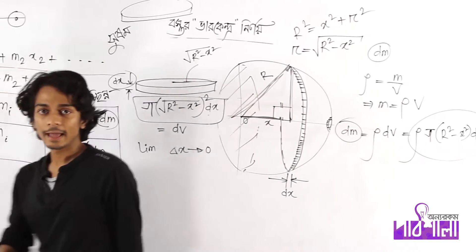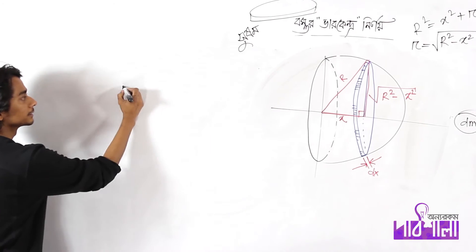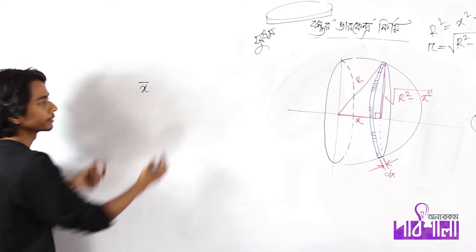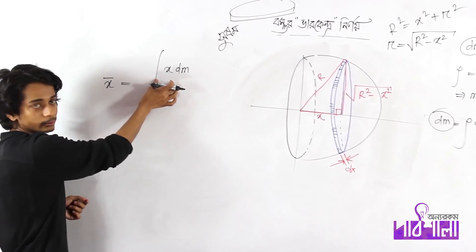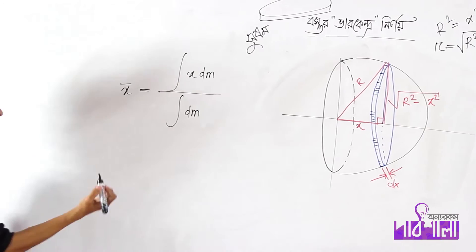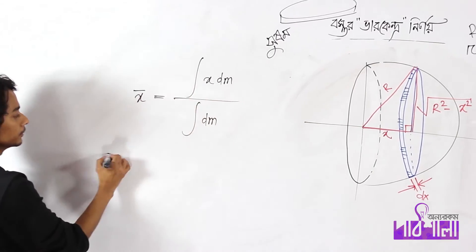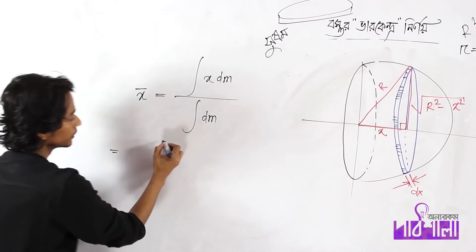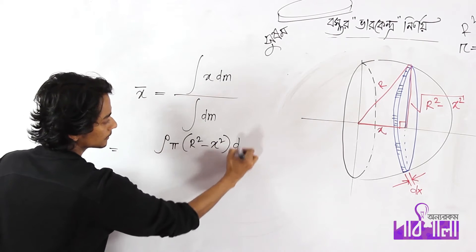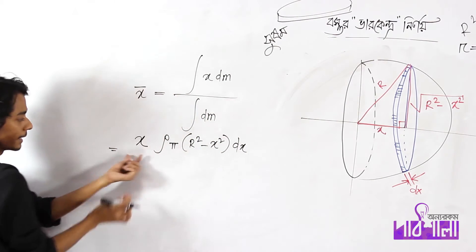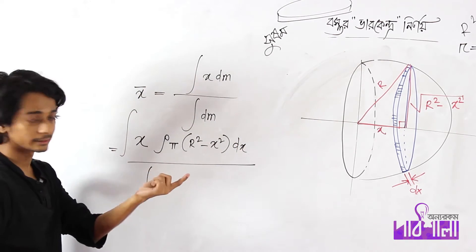dm in physics is continuous. x̄ is equal to ∫x·dm, divided by total ∫dm. Integration of r²-x² dx, and x·dm with integration of x·dm.